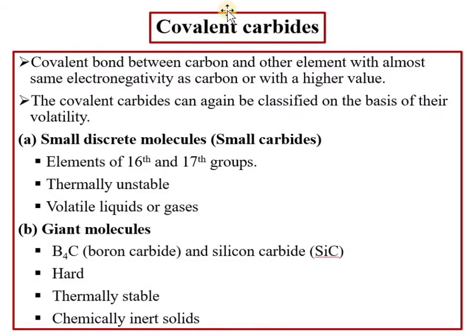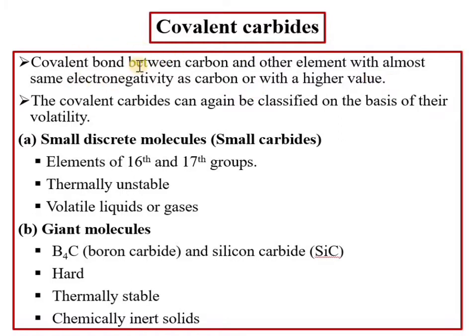The next category is covalent carbides. Covalent carbides are formed by p-block elements, especially of groups 14, 16, and 17, and boron also forms this kind of carbide. Covalent carbides involve bonds between carbon and other elements with almost the same electronegativity as carbon.